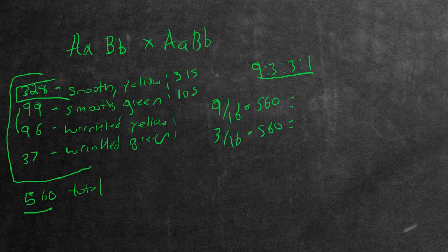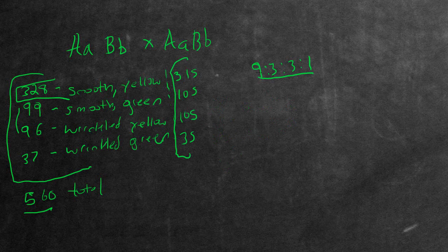And if you did that again, you're going to get another 105. And now if you do 1 out of 16 multiply 560, you'll get 35. So all of the numbers right here are the expected progeny based on the 9 to 3 to 3 to 1 ratio that's predicted by Punnett squares.